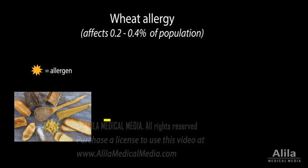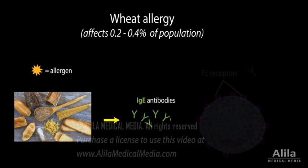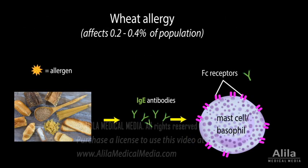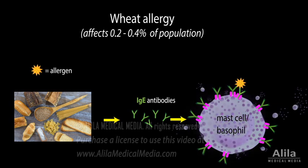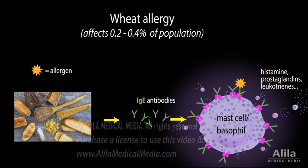Wheat gluten is also involved in wheat allergy. Allergy is an immediate abnormal immune response, usually within minutes of ingestion. The mechanism is similar to other food allergies and involves IgE-mediated release of histamine and other inflammatory chemicals from mast cells.